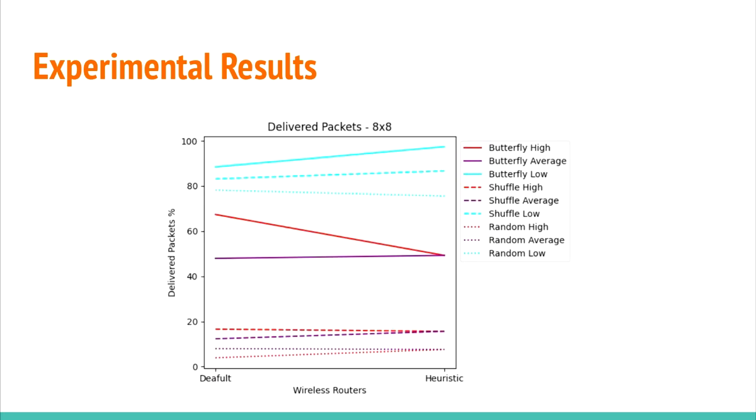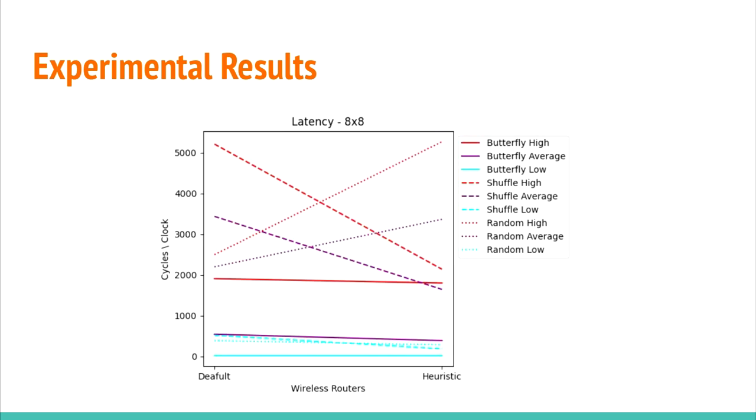For 8x8 networks in the experiments, for high injection rate, proven is unfavorable. With low or average injection rates, the network achieves good performance due to the mapping. With larger networks, the search space increasing requires more exploration and changing parameters looking for improvements.